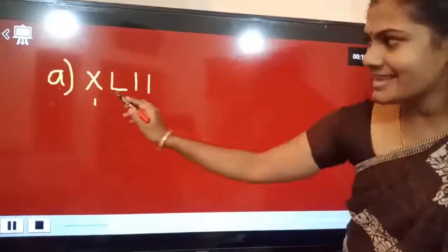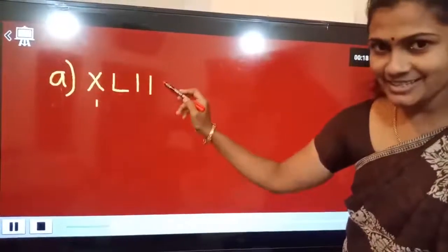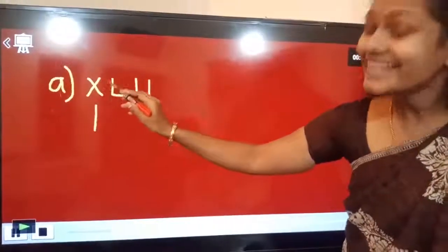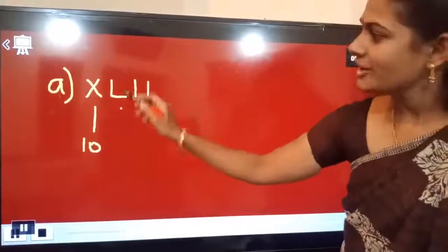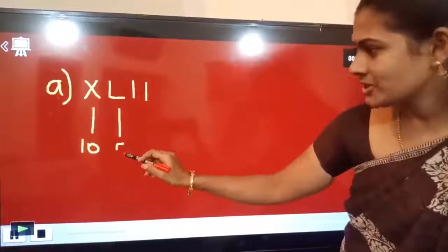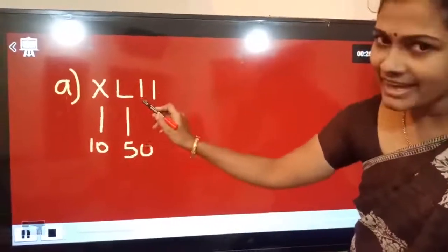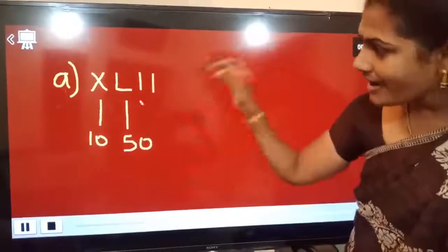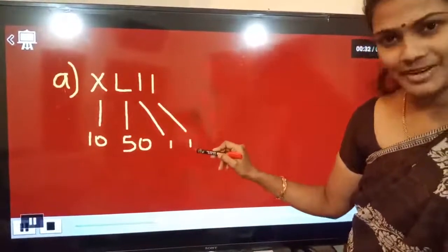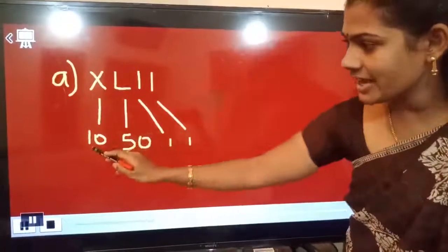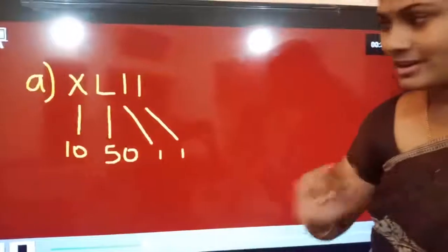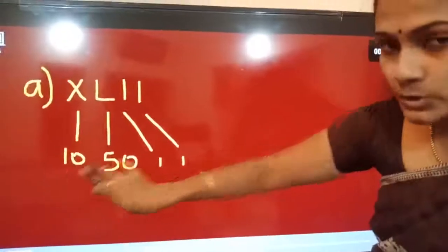Now XLII. First we want to write the individual values. What is the value of X? It is 10. What is the value of L? It is 50. Next, what is I? It is 1. Again, one more I is there, so that is also 1. Now we get 10, 50, 1, 1. From the rule: first big number, then two small numbers — check the arrangement.